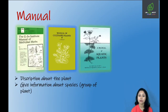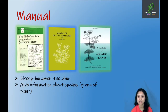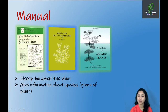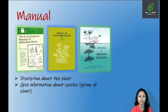Next is manual. Manual bhi flora ki tarah ek booklet hai which also has the same information — plants ki ek list milegi ek particular geographical area mein — along with description about the plants and information about species or group of plants. Examples include manual of medicinal plants, manual of cultivated plants, and manual of aquatic plants. In respective books mein aapko respective plants ki list milegi along with their brief description.